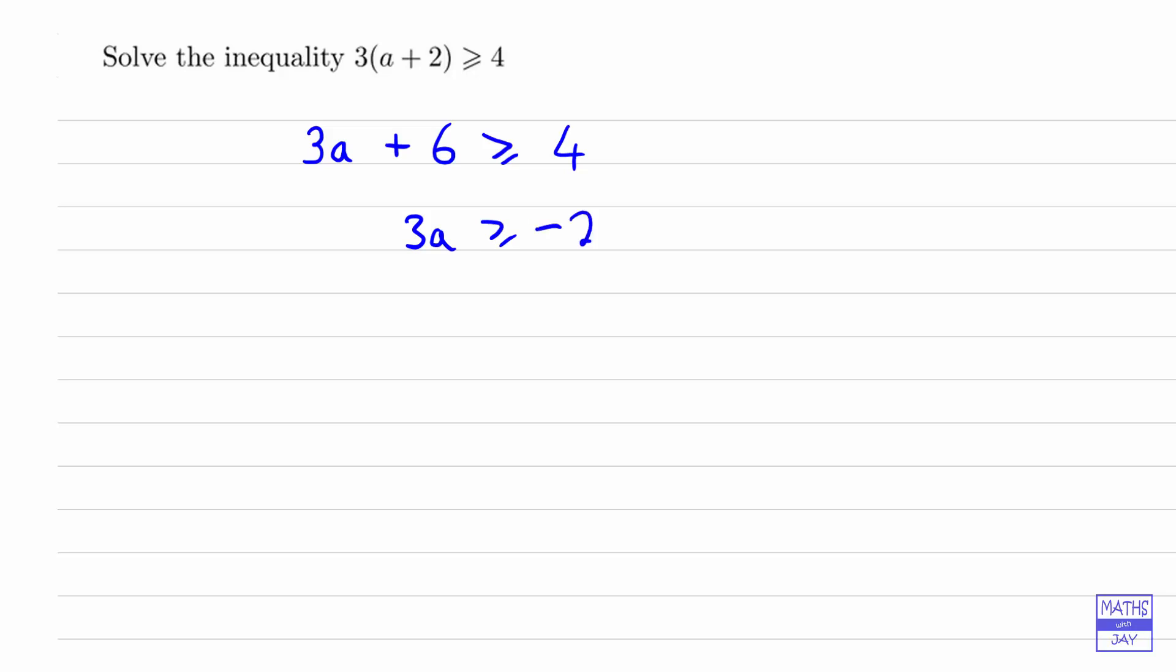Then dividing both sides by 3 - we're dividing by a positive number - so that would give us that a is greater than or equal to -2/3.